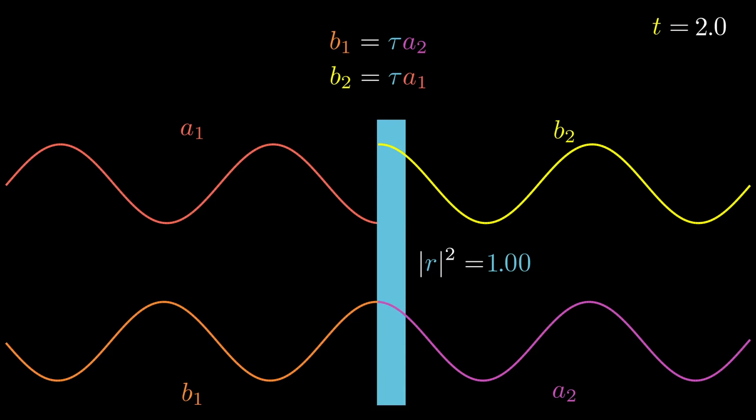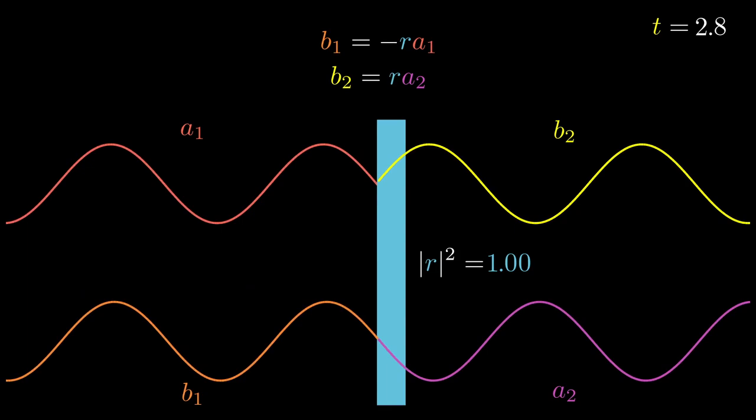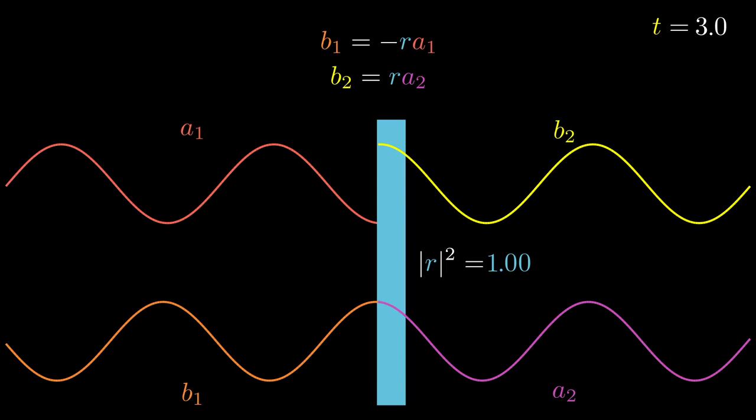Next, we can make our mirror entirely reflective, with no transmission. This time, there is a negative sign for one beam, but not for the other. We won't dive into this too much, except to say that it's a convention chosen based on which side you're reflecting off the mirror.